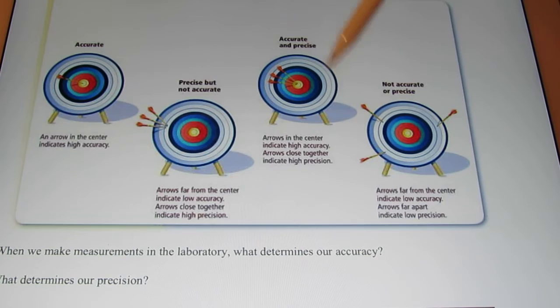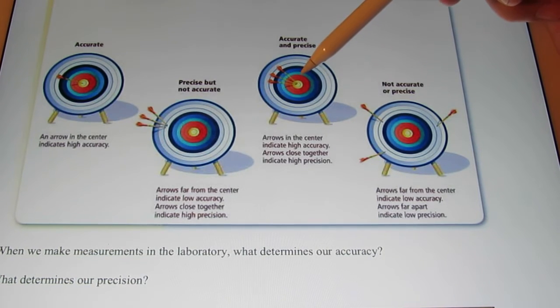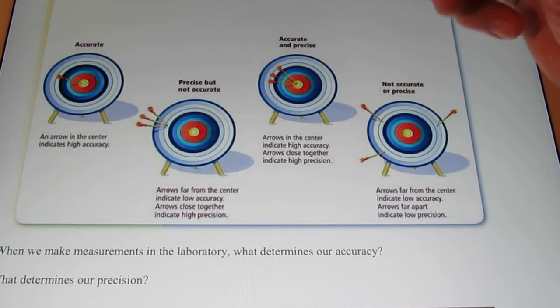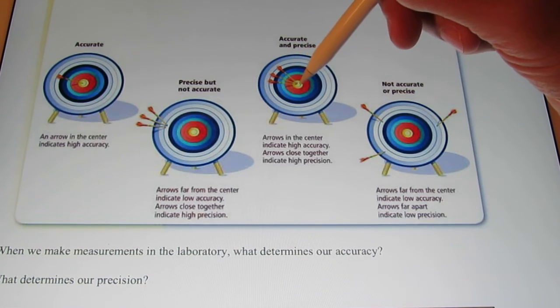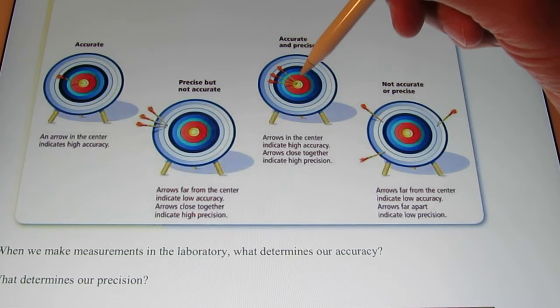And the third scenario here, this third target. Here, obviously, I'm very accurate. I hit the bullseye each time with my three arrows and I hit it each time with my three arrows. I am accurate and I am precise.